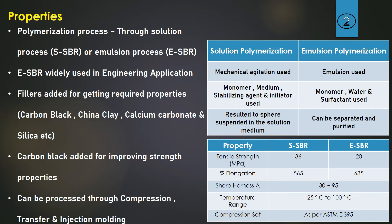Regarding properties: the tensile strength of SSBR is 36 MPa and ESBR is 20 MPa. Elongation percentage is 565% for SSBR and 635% for ESBR. Shore hardness varies from 30 to 95 based on filler and additive additions. The temperature range it can withstand is minus 25°C to 100°C, and compression set is tested as per ASTM D395.